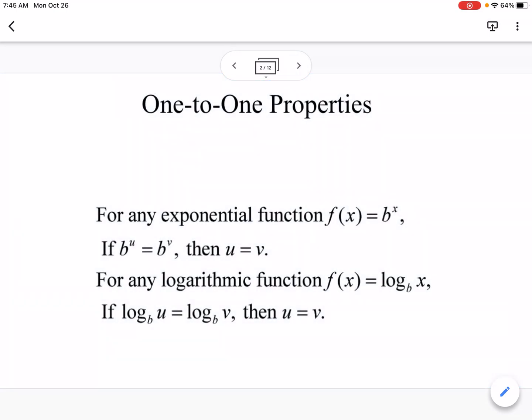We can solve equations using one-to-one properties. If we have b to the u equals b to the v, then we know that the exponents u must equal v. Same thing with logs. If we have log base b of u equals log base b of v, then we know u and v must be equivalent.